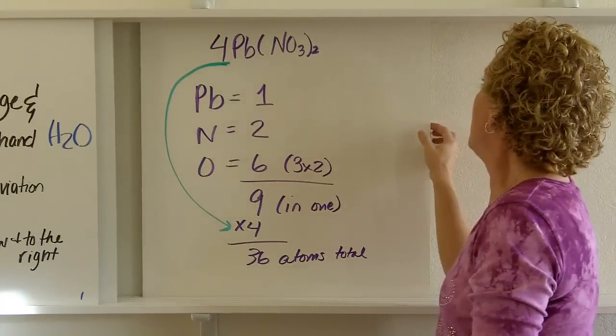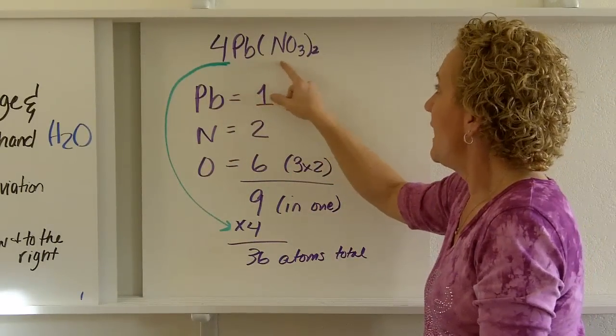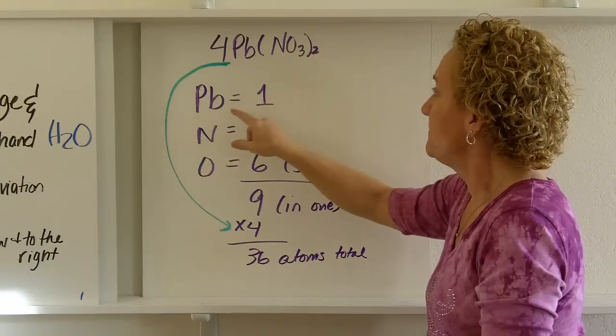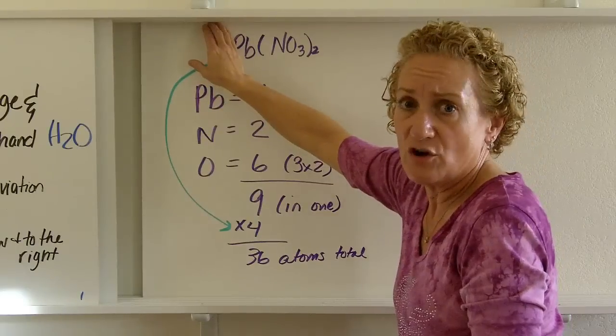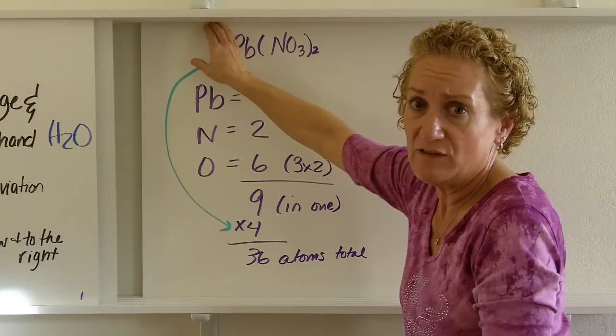Let's do one last example. 4Pb(NO3)2. How much lead? 1. Again, we're going to ignore the coefficient, ignore the 4 for right now, pretend like it's not even there.